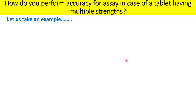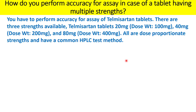To explain this complex scenario, I would like to take an example, because examples always help in understanding the topic. You have to perform accuracy for the assay of Telmisartan tablets, and there are three strengths available: Telmisartan 20 mg with a dosage weight of 100 mg, Telmisartan 40 mg with a dose weight of 200 mg, and Telmisartan 80 mg with a dose weight of 400 mg. All are dose-proportionate strengths with a common HPLC test procedure.